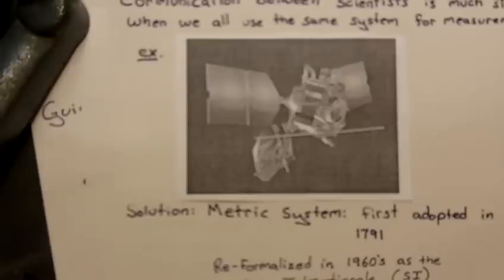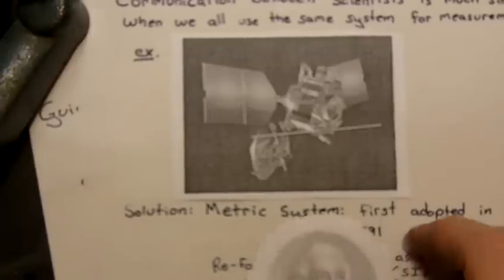It was actually worked on for almost 100 years before that, but in 1791 it was adopted thanks largely to the work of this gentleman here. This is Lavoisier. You probably have seen him in your chemistry classes. He was actually also very involved in the mathematics and also in developing the metric system.